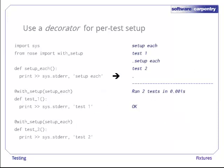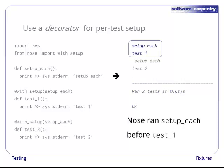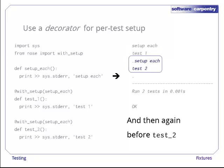Here's the output when we run this program with nosetests. Once again, the standard Nose output in blue shows that two tests were run successfully. If we look at the output from our own print statements, we can see that Nose ran setup_each right before it ran test_1, and ran it again before test_2, just as we wanted.